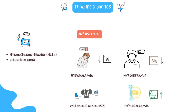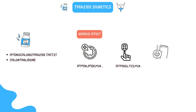Lastly, hypercalcemia. By increasing calcium reabsorption from the luminal membrane into the interstitium in exchange for sodium, thiazides reduce urine calcium levels and increase blood calcium. Along with all of this, there could be hyperlipidemia, hyperglycemia, and hyperuricemia.